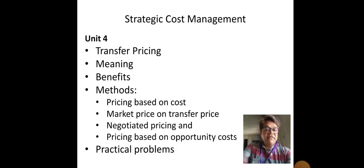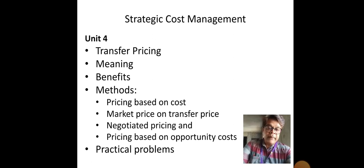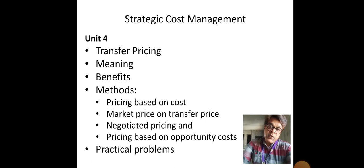There are three production departments namely A, B, and C, and two service departments namely X and Y. All five departments are contributing in one way or another to producing a commodity. What about the total cost incurred? Here we focus on the production departments, as service departments are rendering services only.